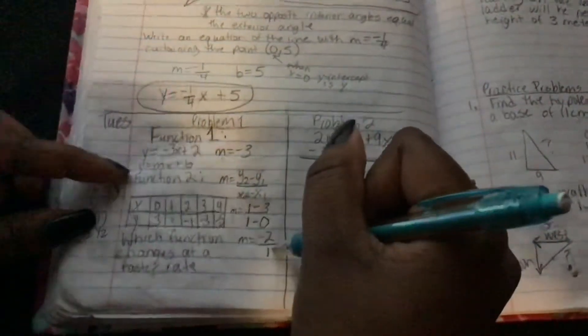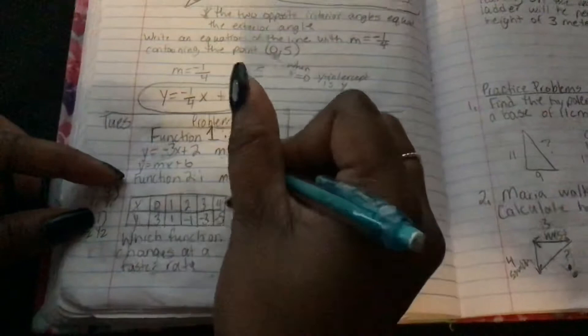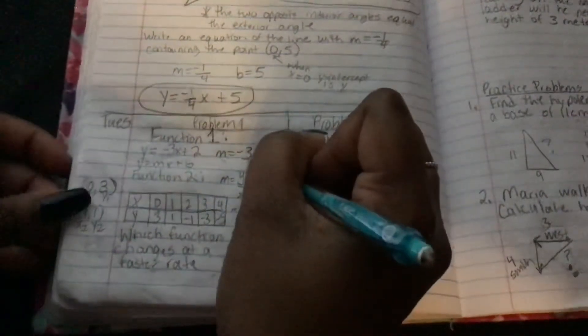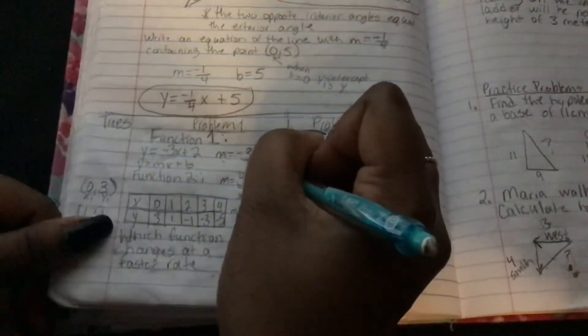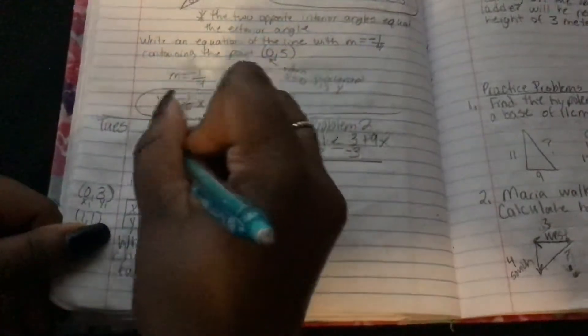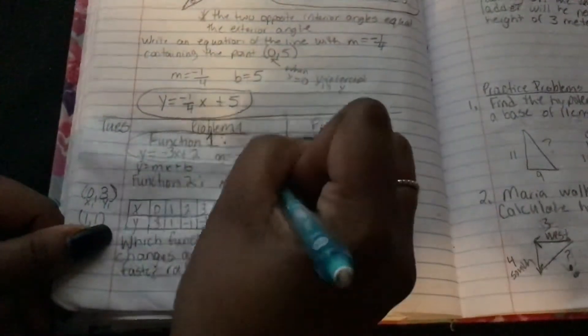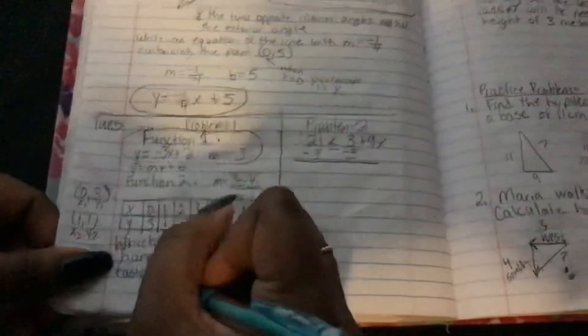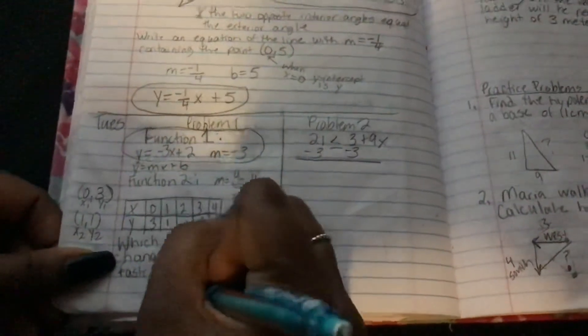So this function, number 2, is going down 2, this is going down 3. The one that's going down 3 is going at a faster rate. So function 1 is your answer.